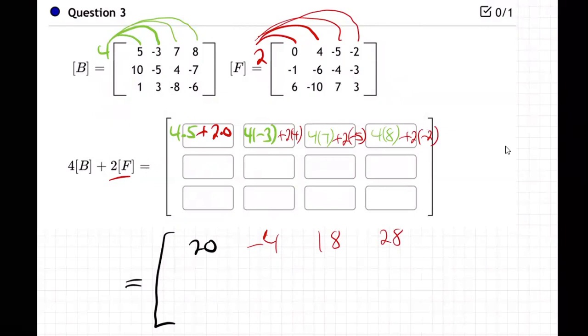Next row, and we're one third of the way done. Four times 10 plus two times minus one. That'll be 40 minus two, which is 38.